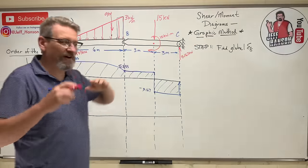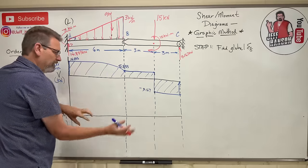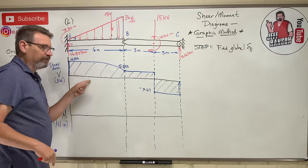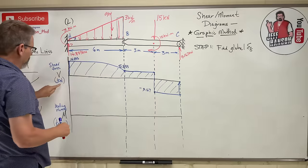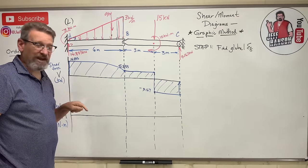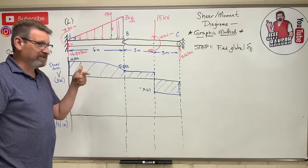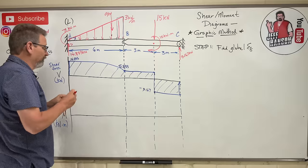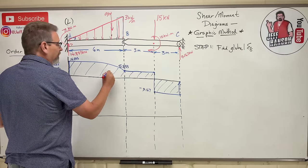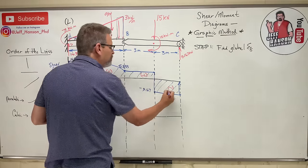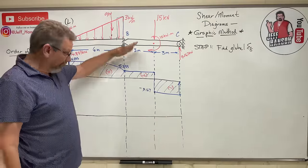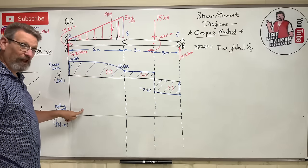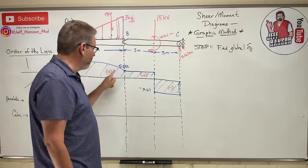Now the graphic method: I use this V graph to determine the M graph below it. The horizontal dimension is in meters and the vertical is in kN, so the area of a shape on the V diagram has units of kN·m — that's a moment. So the area of each region on the V diagram tells me the change in moment on the M diagram.